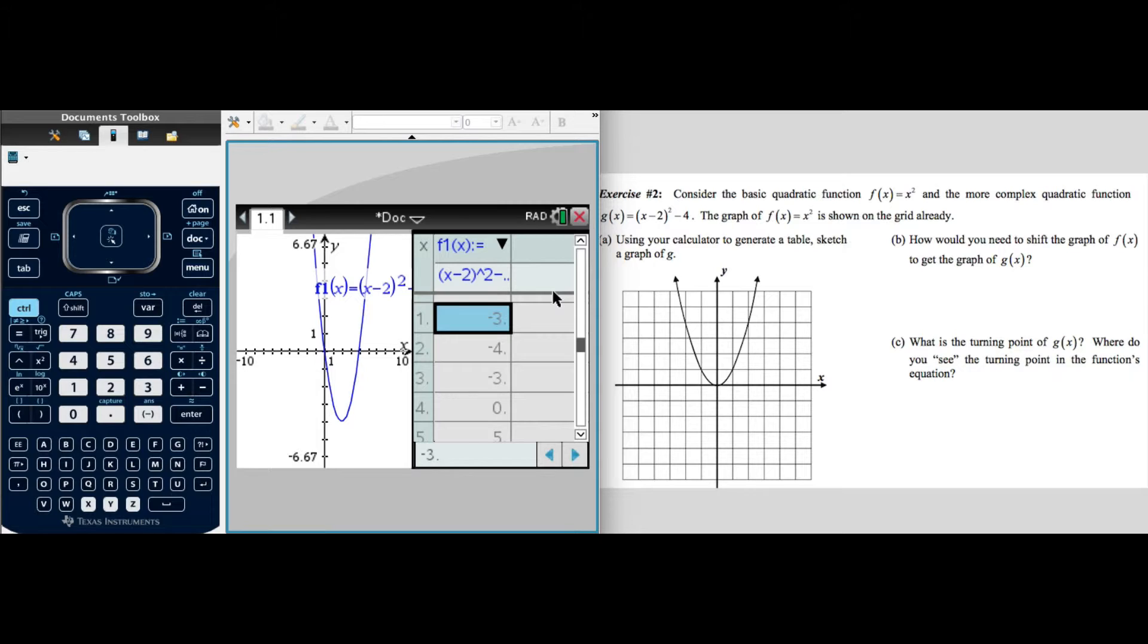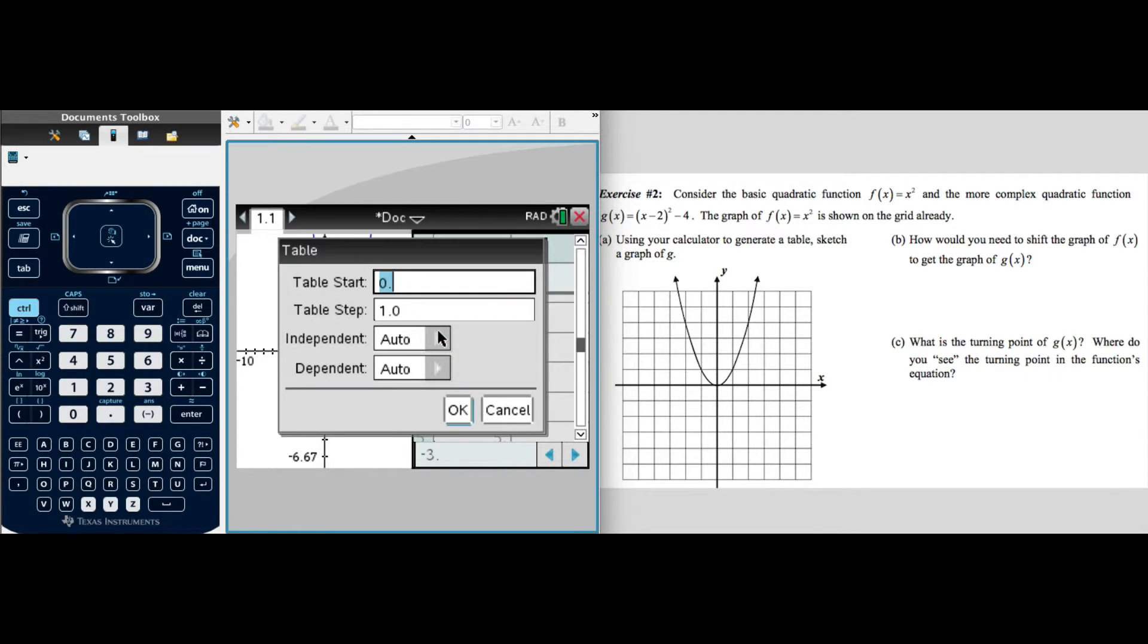It really should be starting at 0. It starts at 1. The handheld works as it should. It would start at 0. But we want to change that. Because if we look at our graph, we have a range, or a domain of, and range of negative 6 to 6. So how do we do that? Well, we'll just go to our table, edit table settings.